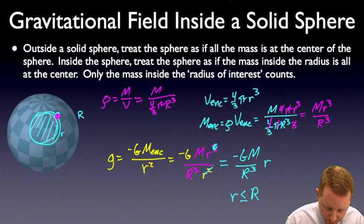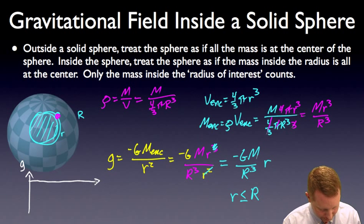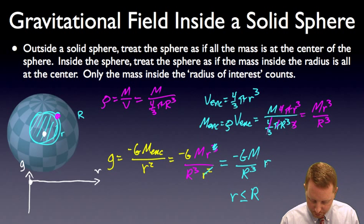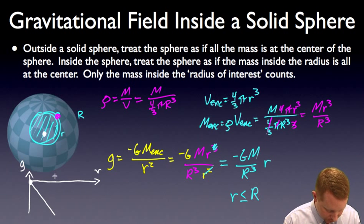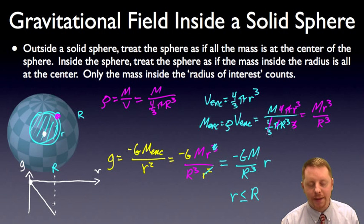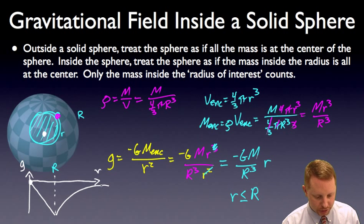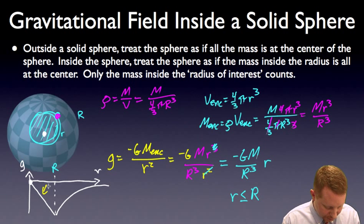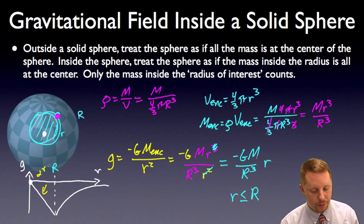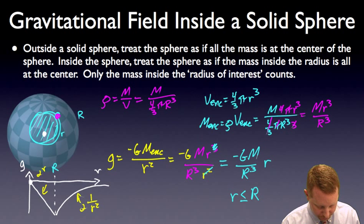Graphing that: gravitational field strength versus radius. Inside the sphere, at the exact center there's no mass enclosed so the field is zero, and it grows linearly out to radius R. Once outside R, the field behaves as if all mass is concentrated at the center — back to the standard 1 over r squared relationship. So inside the solid sphere the field is proportional to r, and outside it follows 1 over r squared.